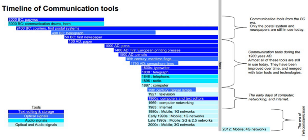1947 – Douglas H. Ring and W. Ray Young of Bell Labs propose a cell-based approach which led to cellular telephony. 1947 – Full-scale commercial television is first broadcast.